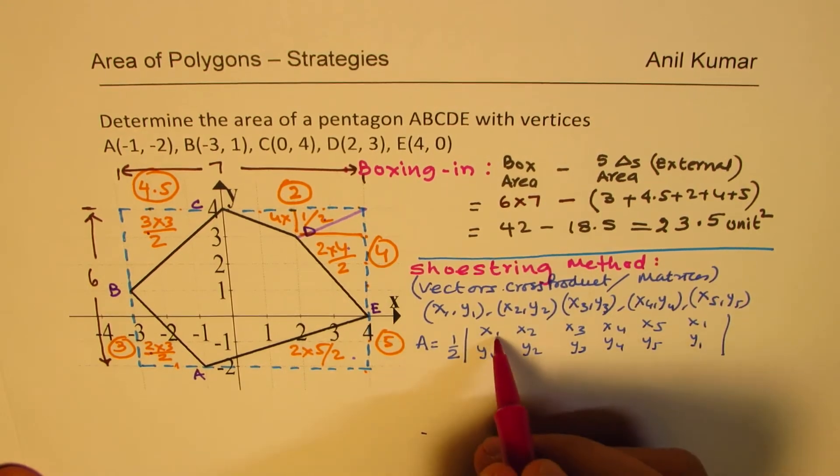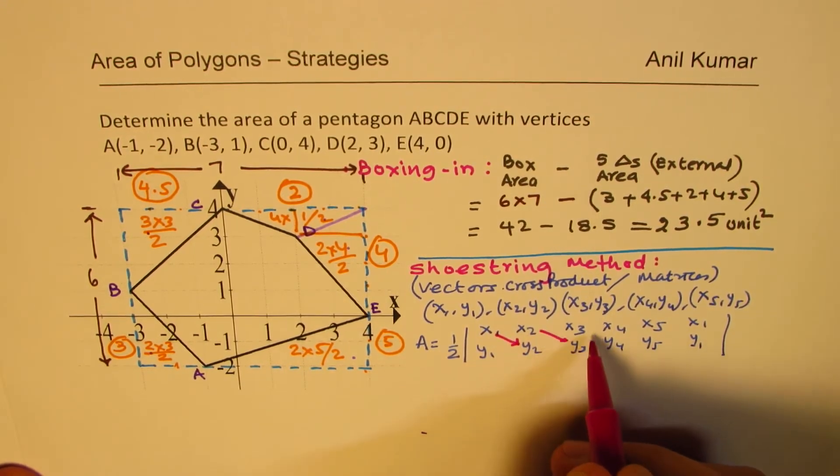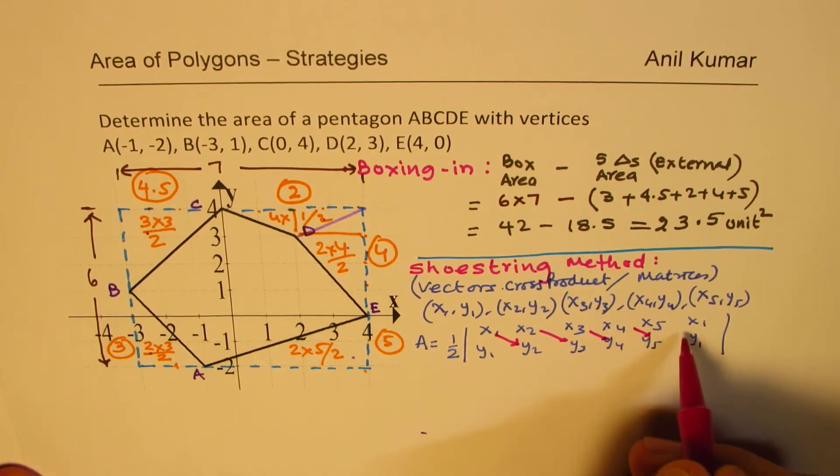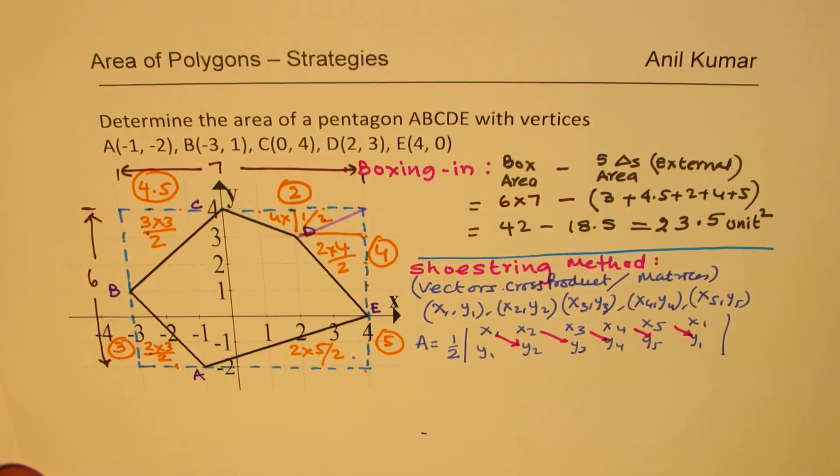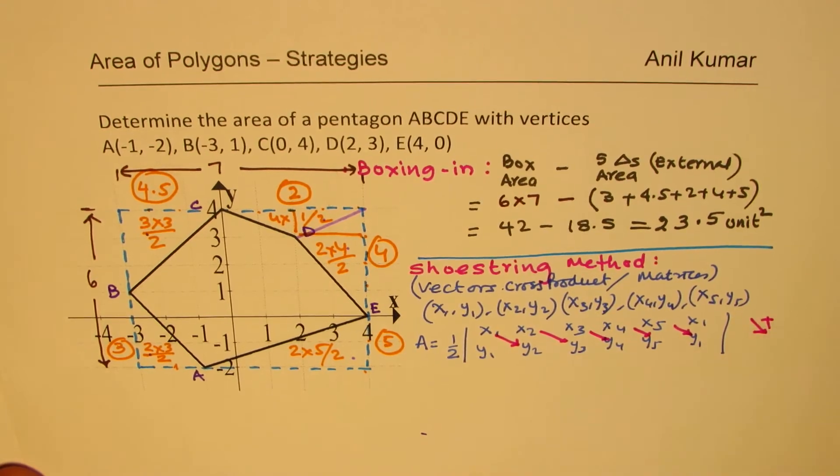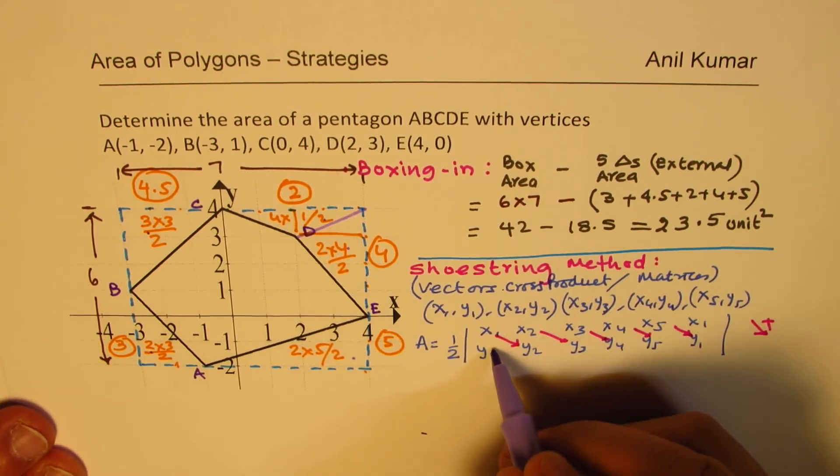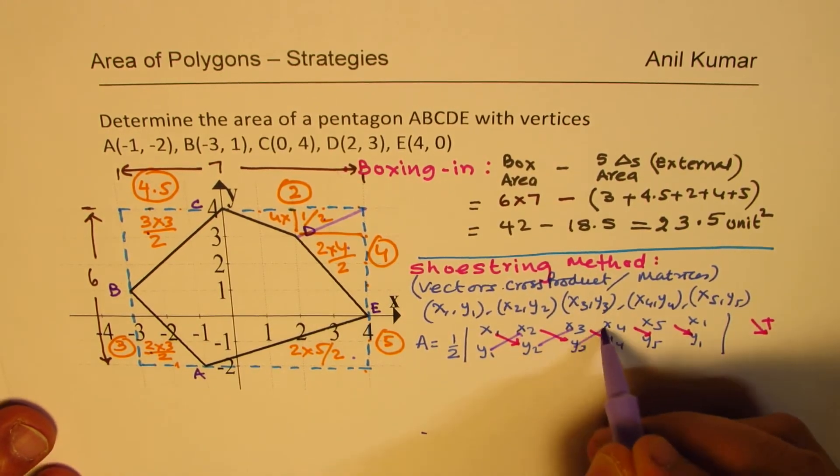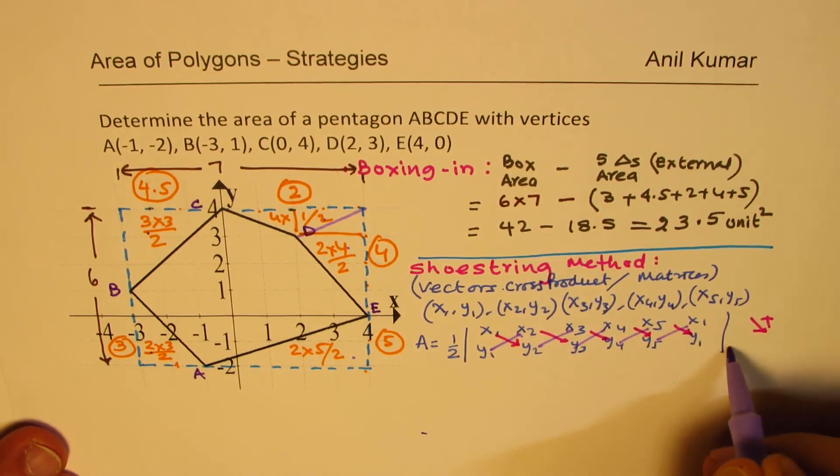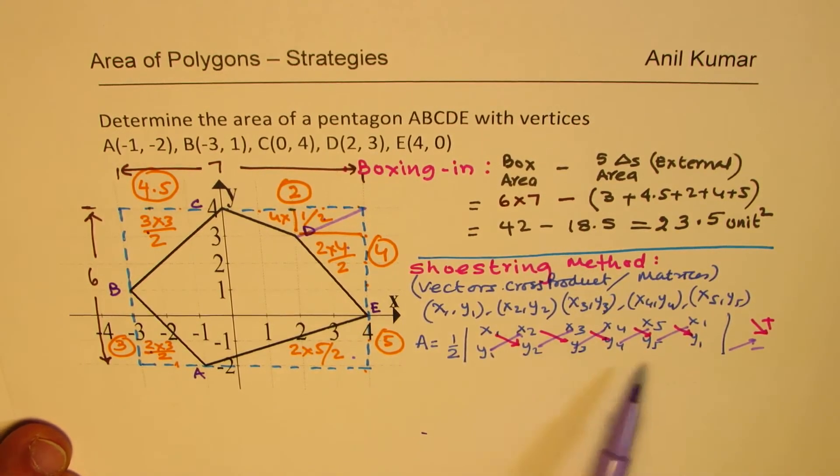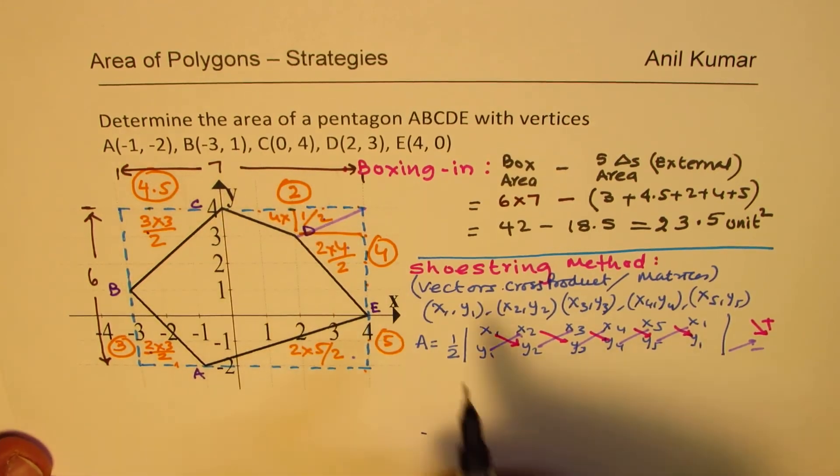So the formula actually includes these products. These products which I have shown you, they are with positive signs. The products which I am going to now show you in the reverse direction will be with the negative sign. Sum of all this comes inside. Now, we'll actually plug in the values and calculate to show you the result.